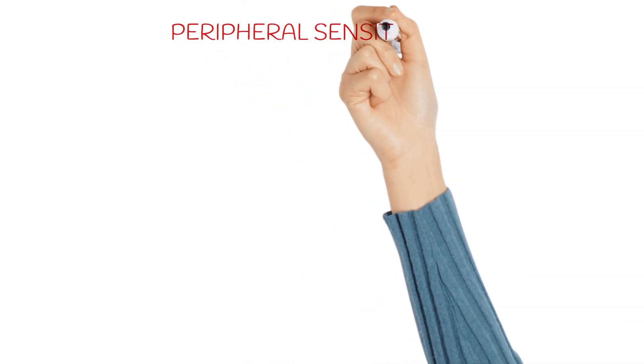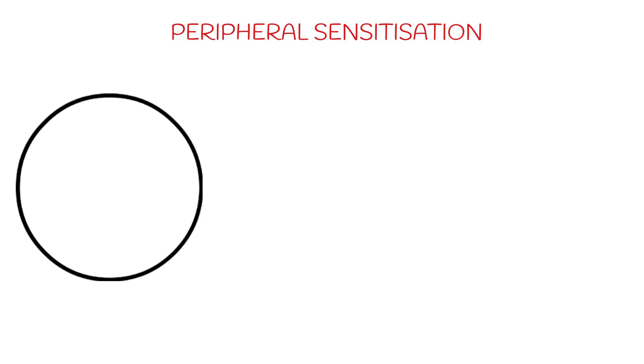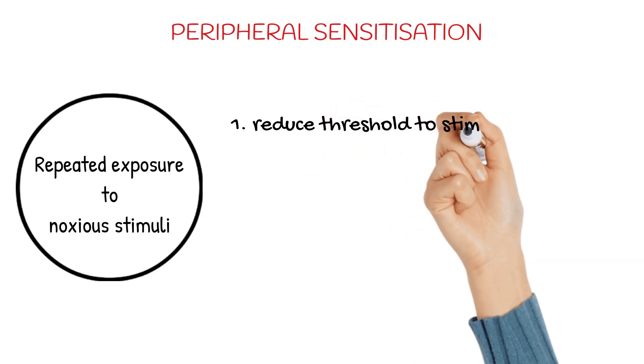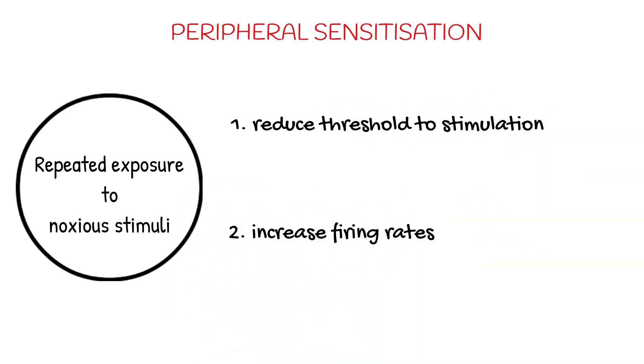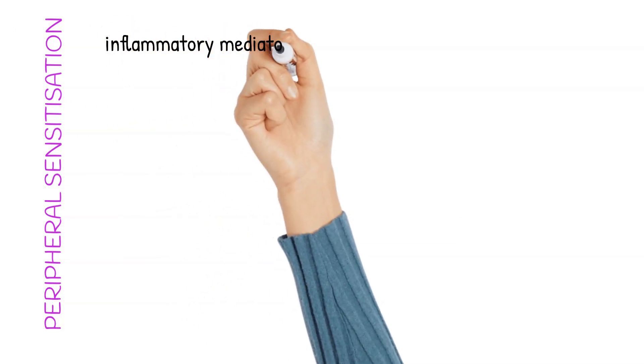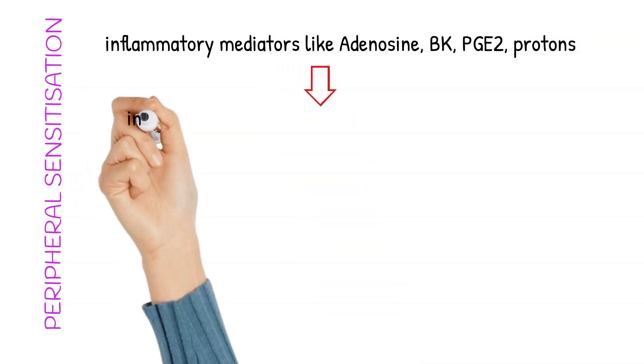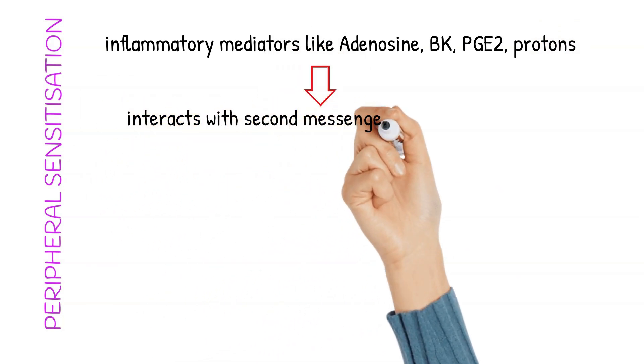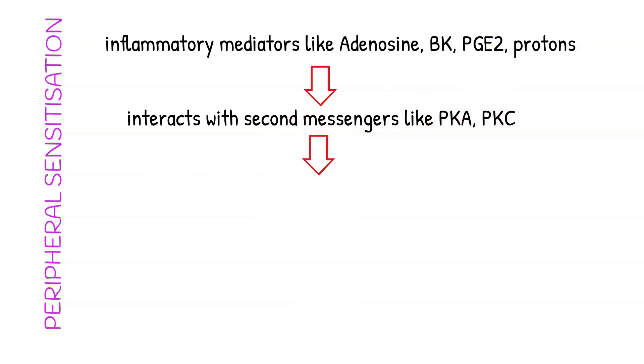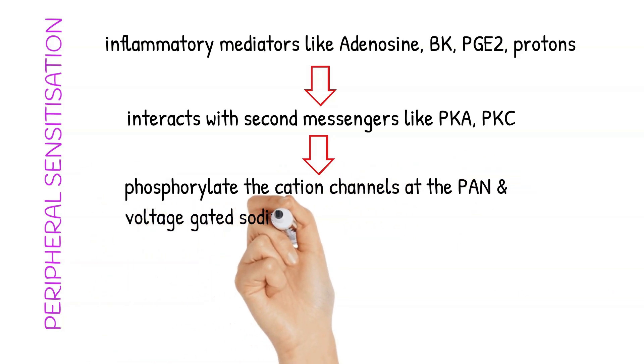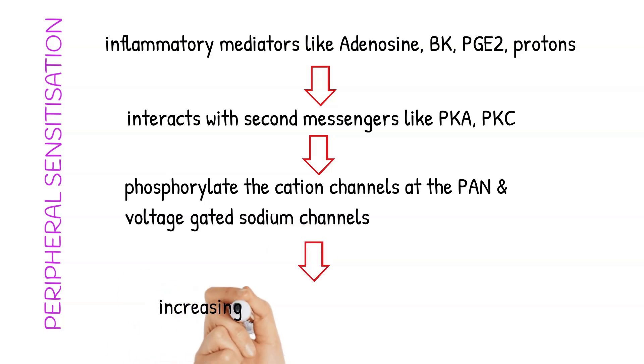Let's first see what is peripheral sensitization. On repeated exposure to noxious stimuli reduces the threshold to stimulation and increases firing rate. Inflammatory mediators like adenosine, bradykinin, prostaglandin E2 and protons are released which interact with the second messengers like protein kinase A and protein kinase C. These second messengers phosphorylate the cation channels present at the primary efferent neuron or the first-order neuron and the voltage-gated sodium channels, thus increasing membrane depolarization and action potential.